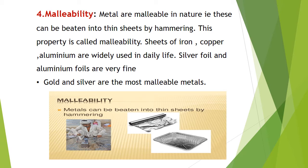Malleability: metals are malleable in nature, which means these can be beaten into thin sheets by hammering. This property is called malleability. Sheets of iron, copper, and aluminum are widely used in daily life. Silver foil and aluminum foil are very fine examples. Gold and silver are the most valuable metals and can be used for making sheets.